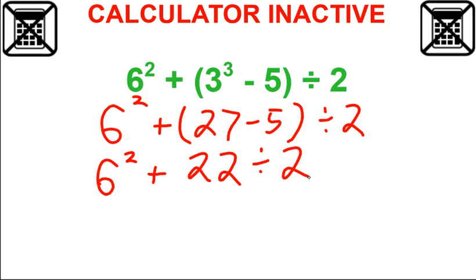So parentheses first. Once we have the parentheses, now we keep going. Next is exponents. So six to the second power is six times six. That's 36.